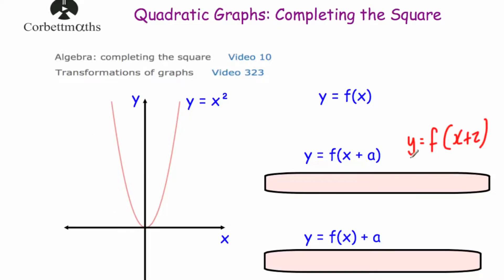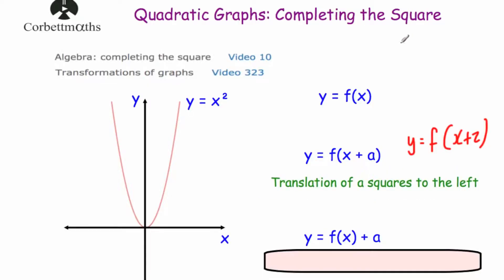If it was y equals f(x minus a), that translates the graph a squares to the right - it's counterintuitive. We also consider what happens when you add outside the brackets: y equals f(x) plus a, where the a is outside, moves the graph a squares upwards. So y equals f(x) plus 3 would move the graph three squares upwards, giving a turning point at 0, 3 instead of the origin. Those two transformations are very important for this topic.